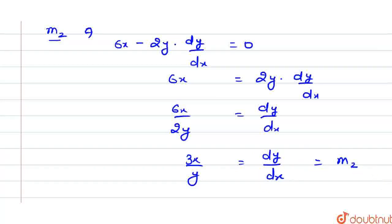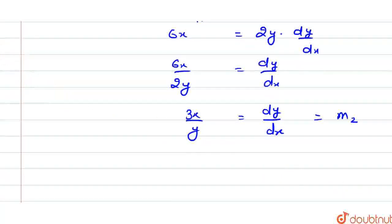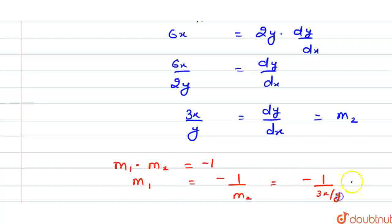Now, tangent and normal are perpendicular to each other. We know that if two lines are perpendicular, the product of their slopes is minus 1. So M1·M2 = -1, which means M1 = -1/M2 = -1/(3x/y) = -y/3x.